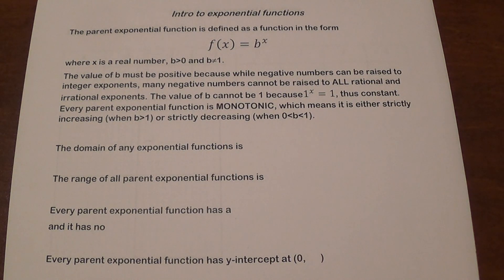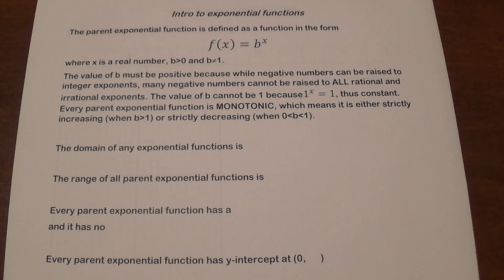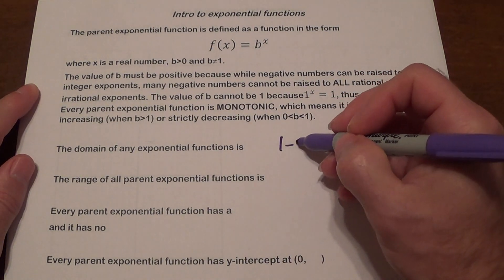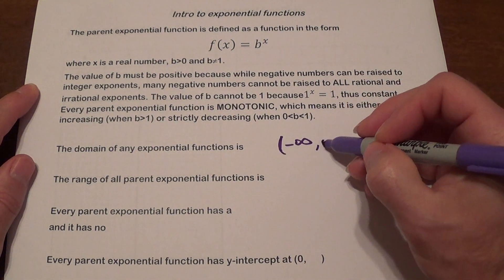Every parent exponential function is a monotonic function, which means it's either increasing — it's going to increase when the value of b is greater than 1 — or decreasing when the value of b is between 0 and 1. The domain of any exponential function is all real numbers, so negative infinity to infinity.